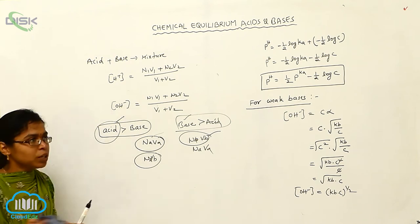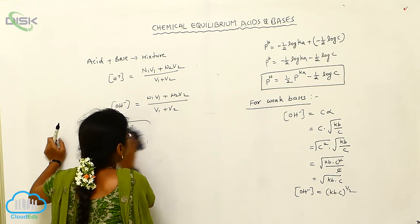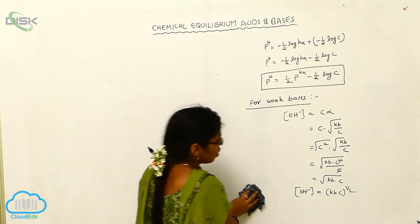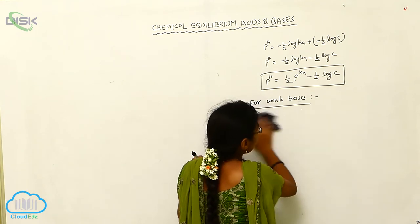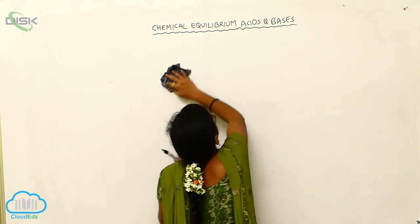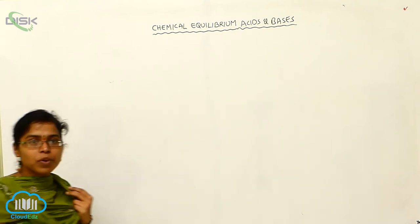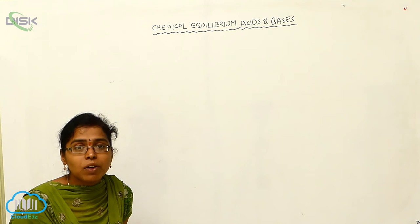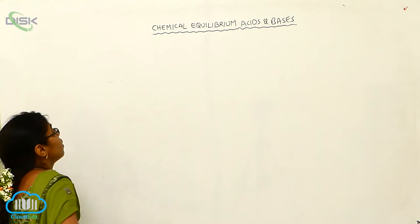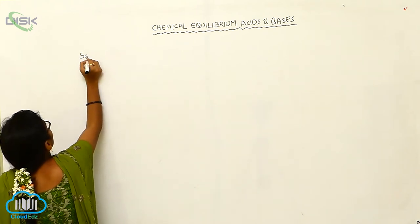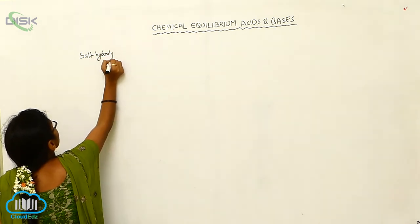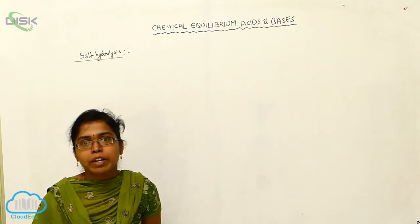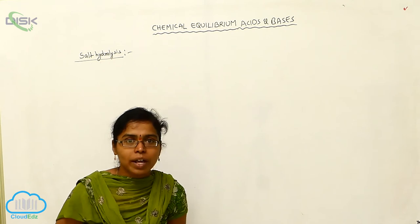The next topic is salt hydrolysis. Before that, what is salt? Salt forms because of neutralization. Whenever an acid and a base come together, they form salt plus water — that is called salt formation, and that reaction is called neutralization. Salt hydrolysis is when we take a salt and add it to water; it forms cations and anions. That is called salt hydrolysis.